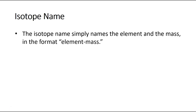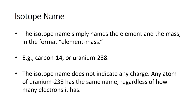The last thing is the isotope name. To the extent that isotopes are mentioned in popular culture, the isotope name gets used a lot. The isotope name simply names the element and the mass of that particular isotope in the format of element name dash mass number — for example, carbon-14 or uranium-238. These never tell us anything about the charge and therefore the number of electrons. Any atom of uranium-238 is just going to be called uranium-238, regardless of whether or not it has a charge. These names do not concern themselves with charge or electrons — it's simply the name of the element and its mass.